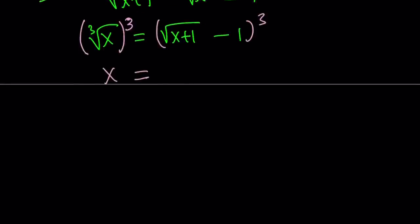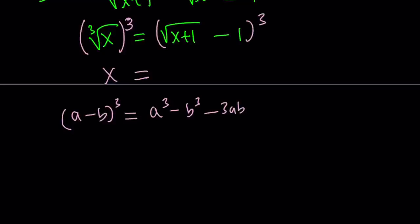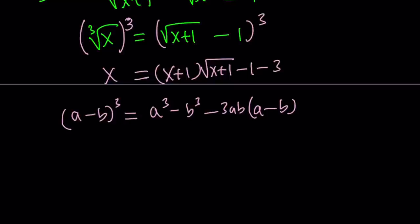x on the left-hand side. For (a minus b) cubed, I have a really nice formula: a cubed minus b cubed minus 3ab multiplied by (a minus b). If you use that formula, you're going to get the following: if you cube square root of x plus 1, that gives you (x plus 1) times square root of x plus 1. Then minus 1 minus 3 times square root of x plus 1, multiplied by (square root of x plus 1 minus 1).